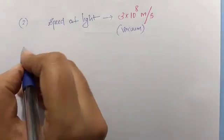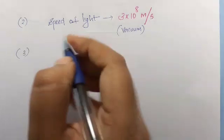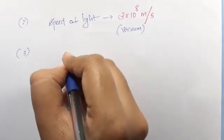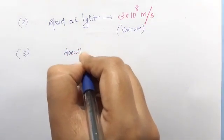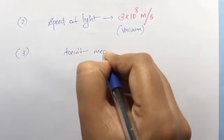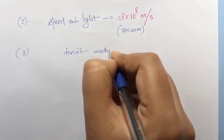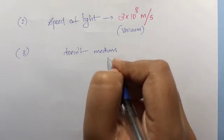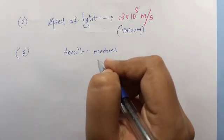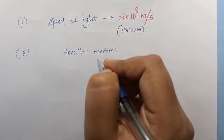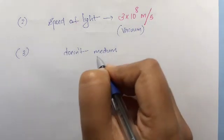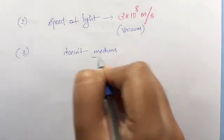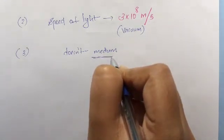The third property: light does not need any medium to travel. Light can propagate without a medium. This is because light is an electromagnetic wave — a transverse wave — and electromagnetic waves do not require a material medium to propagate.